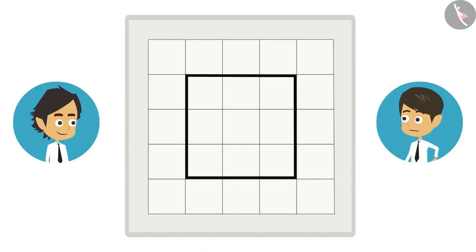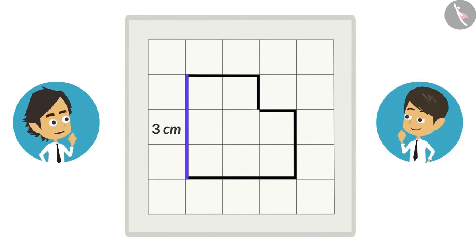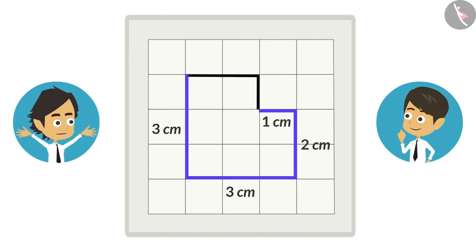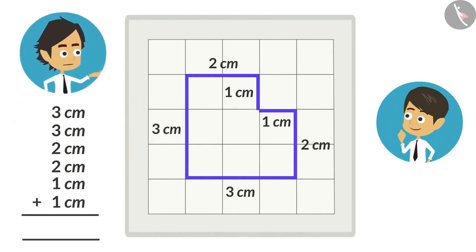Yes! Look! I will remove this one square and change its shape. Now, let's measure this figure. Write down the length of all the sides. 3 centimeters, 3 centimeters, 2 centimeters, 1 centimeter, 1 centimeter, 2 centimeters. If you add all these, the answer will be 12 centimeters.